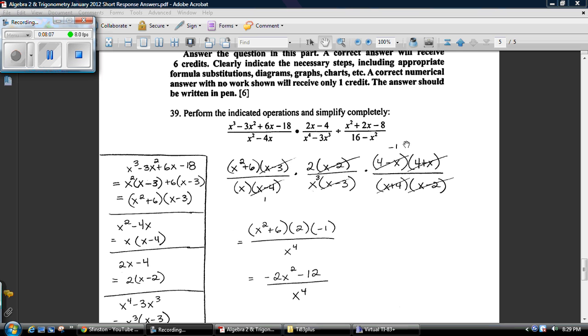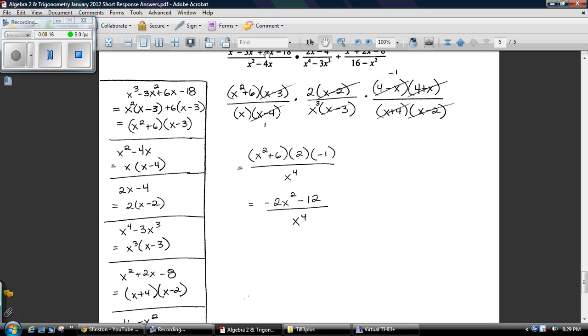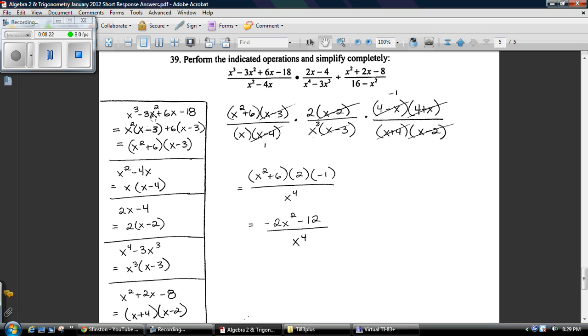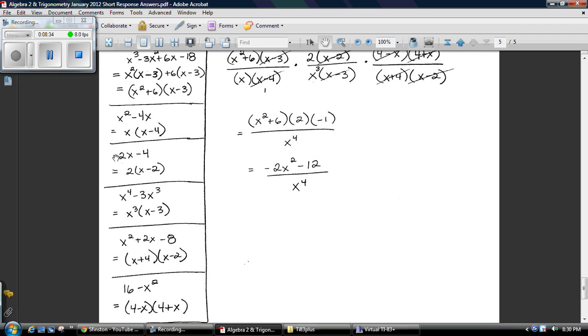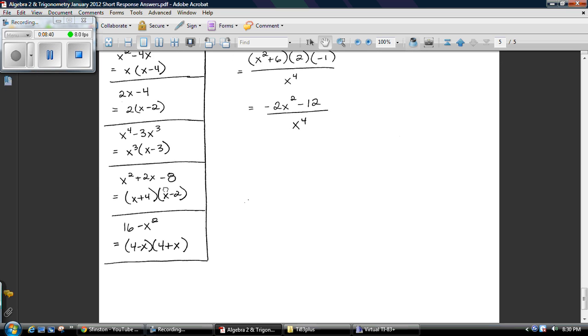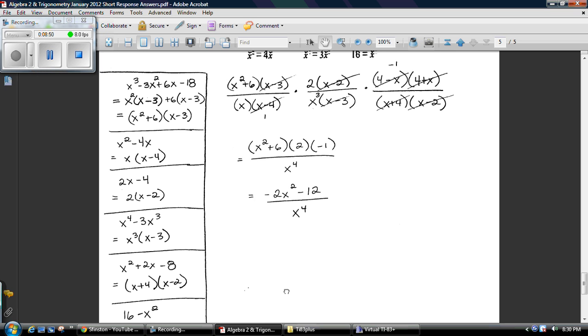Question number 39, 39 is always the toughest, worth the most points. Look, it's a huge factoring problem. So the first thing I did, instead of continuously writing out this thing in its factored form, is I took each one of these on the sidelines and I broke them down. Factor this one by grouping. These guys have x² in common. These guys have 6. The same thing in parentheses. They go together. x² + 6. These guys' greatest common factor is x, so it's x - 4. Greatest common factor is 2, so it's x - 2. Greatest common factor is x³, so it's x - 3. These guys over here, multiplies to be negative 8, adds to be negative 2. You know the deal. And this one, difference of two perfect squares.